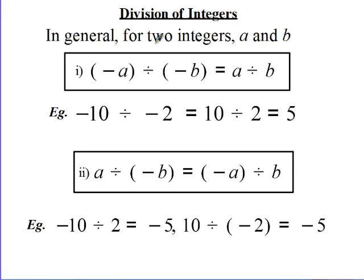Generally, if we have two integers a and b, then the first rule says that if we have negative a divided by negative b, it is the same as a divided by b, meaning our value or answer is going to be a positive number, just as in multiplication of integers. In this example, if we have negative 10 divided by negative 2, then we said is equal to 10 divided by 2, which is 5.